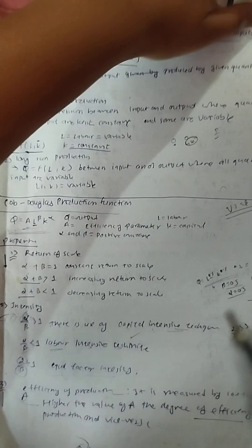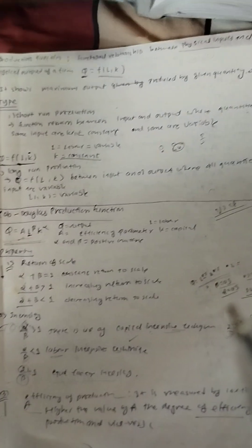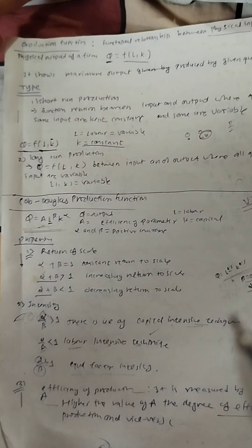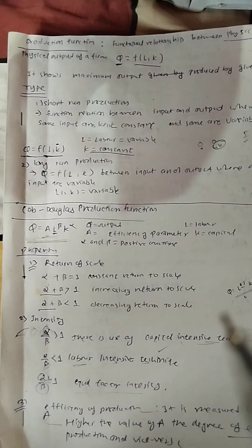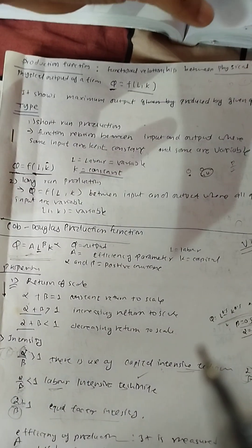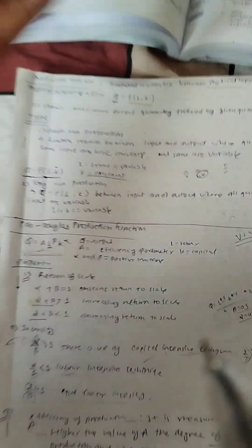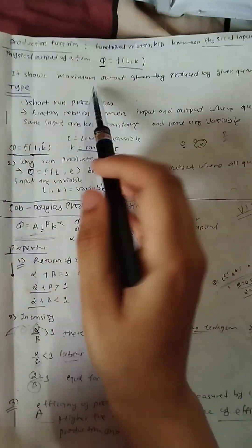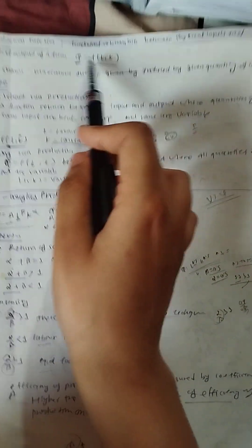So, this is a production function. What is the production function? It is a functional relationship between physical input and physical output - it is called a production function. It gives the maximum possible output. Physical inputs include land, labor, capital, and technology. This means Q is a function of A, L - that is, Q = f(A, L).